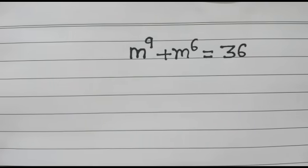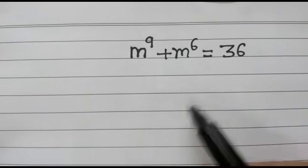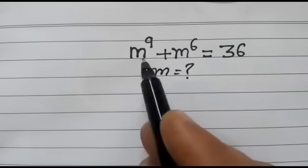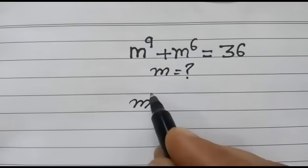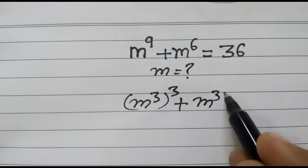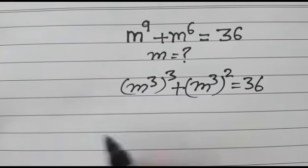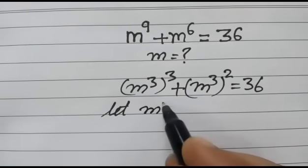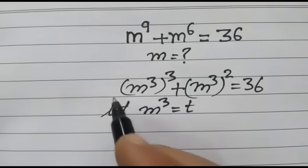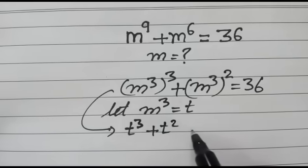Hi friends, good morning. Today we have the equation m to the power 9 plus m to the power 6 is equal to 36. We have to solve it, or we can say we have to find out the value of m. We can write this equation as m to the power 3 whole power 3, plus m to the power 3 whole power 2, is equal to 36. Let m to the power 3 be equal to t, so this equation will transform as t to the power 3 plus t squared is equal to 36.